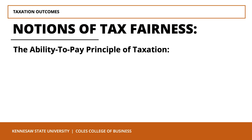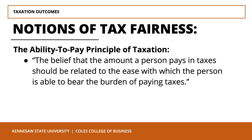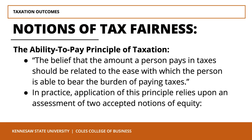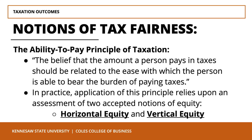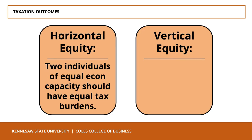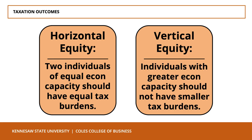The second is the ability to pay principle of taxation: the belief that the amount a person pays should be related to the ease with which they can bear the burden of paying taxes. While this may seem like the less fair option, it is the functionally feasible one. This principle relies upon two accepted notions of equity: horizontal equity — the idea that two individuals of equal economic capacity should have equal tax burdens — and vertical equity — the idea that individuals with greater economic capacity should not have smaller tax burdens, since you cannot obtain large tax revenues from those who don't have much, and taxing the rich at lower rates than the poor seems unfair to most people.